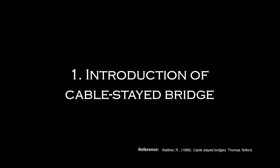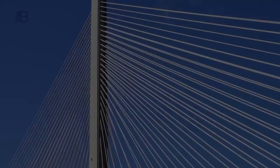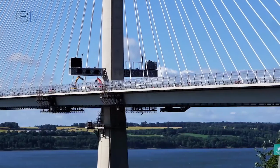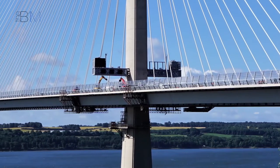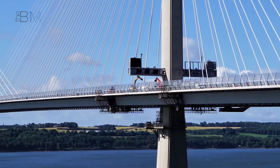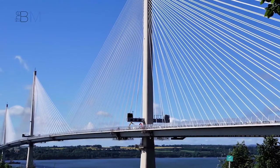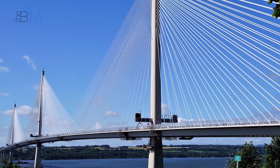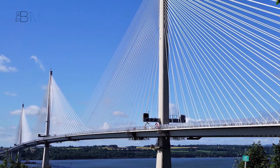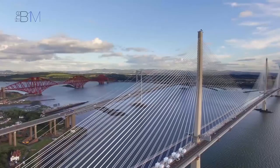A cable-stayed bridge has one or more towers or pylons from which cables support the bridge deck. A distinctive feature are the cables or stays, which run directly from the tower to the deck, normally forming a fan-like pattern or a series of parallel lines.